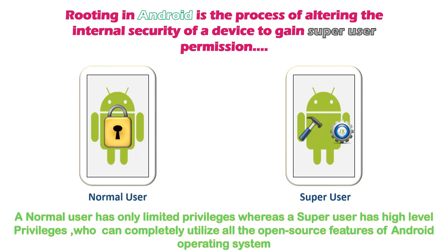For example, a standard user is allowed to access files in the system, but cannot access files inside the system drive. At the same time, a standard user cannot install or uninstall software on the Windows system. In the same way, there are several privileges given to the Super User, and after rooting your device, you become the Super User for your device. Rooting is basically the method of breaking the internal security of an Android device to gain Super User permissions.